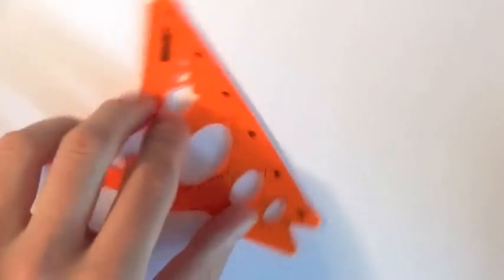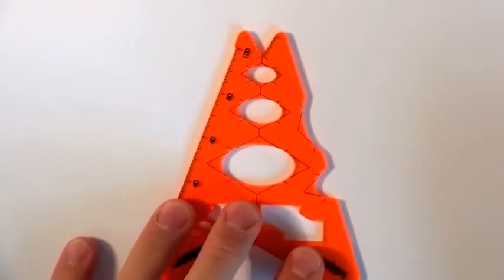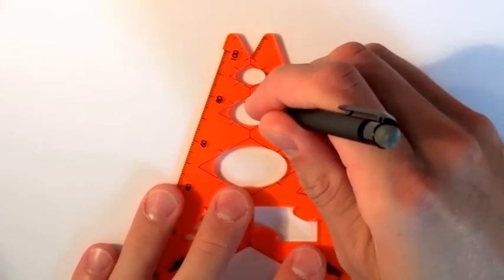So we're going to show you how to draw a brew, a cup of tea or coffee using Isosketch. The first thing to do is we're going to use the ellipse template.